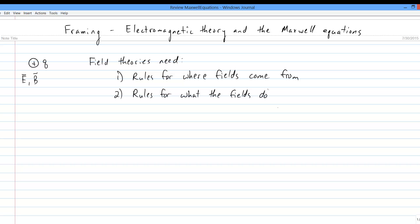In E and M, the rules that describe what fields do are pretty short. Electromagnetic fields exert forces on charges. Electric fields exert forces through F equals QE, and magnetic fields exert forces through F equals QV cross B.